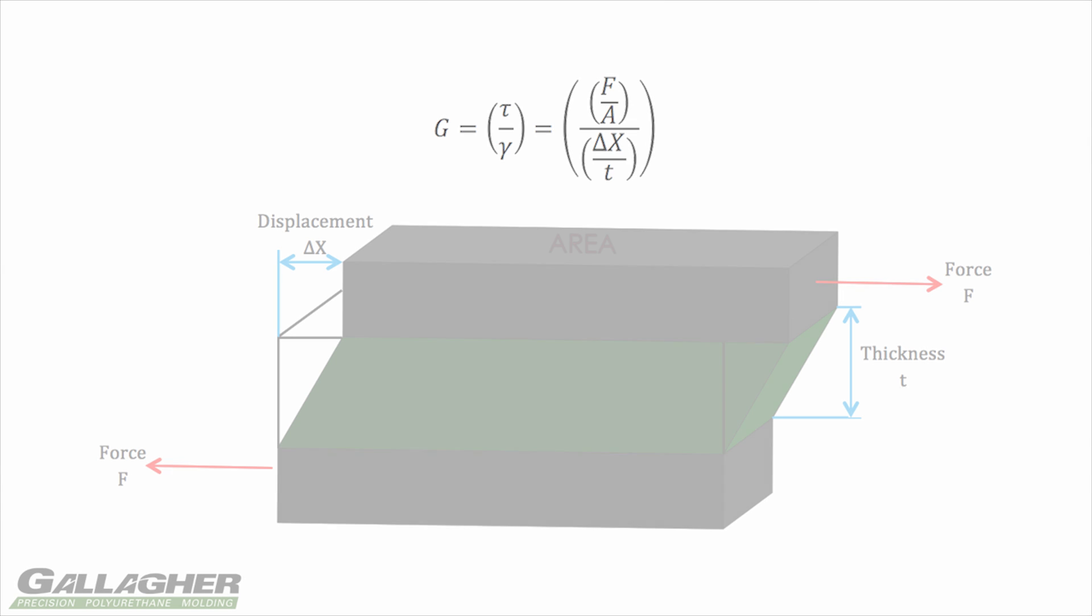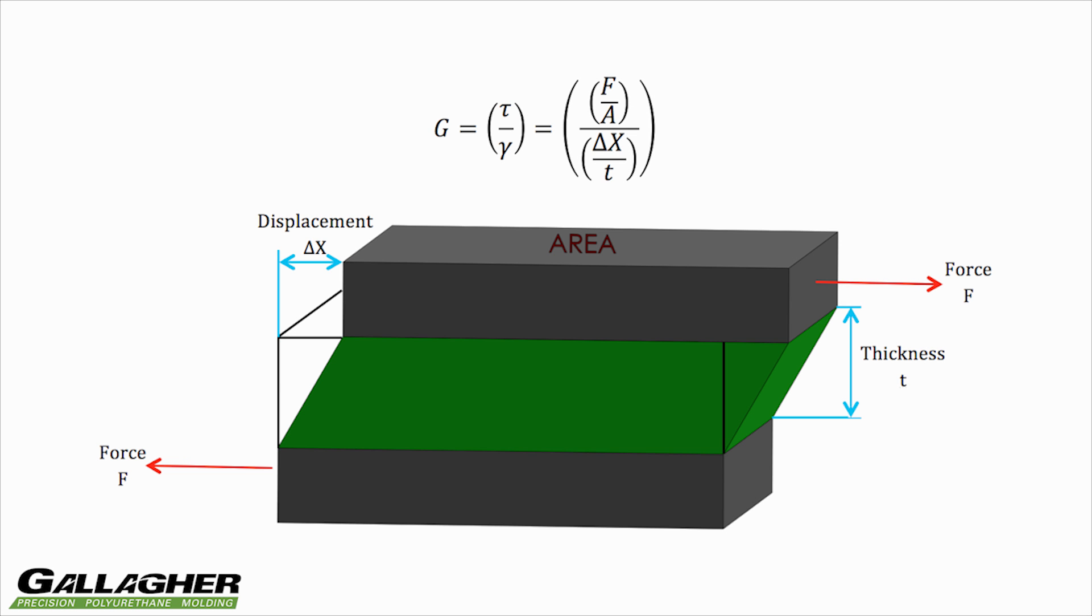Welcome to our video on determining shear modulus. Shear modulus, denoted by G, is the ratio of shear stress to shear strain.